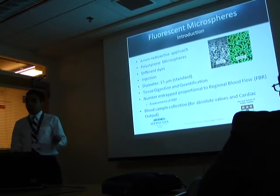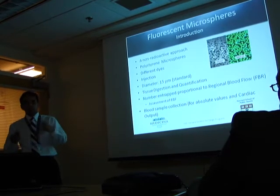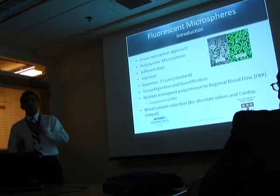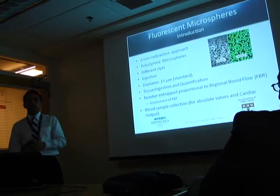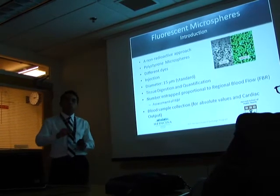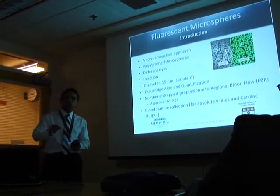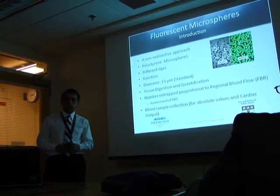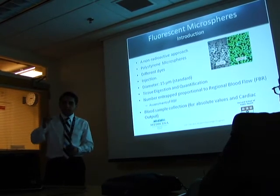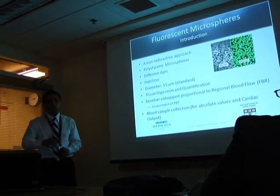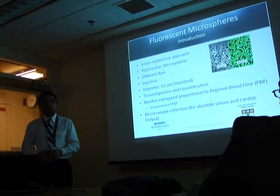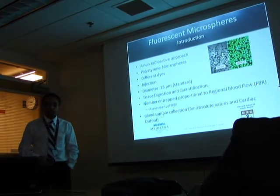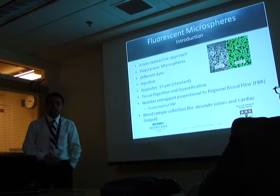The concept is to inject these microspheres into the left chambers of the heart, because we want them to get evenly distributed and mixed with the blood. Then we collect the tissue. They get entrapped in the capillaries — it's important that they are large enough not to get entrapped before in the arterioles, and they need to get entrapped precisely in the capillaries on the first pass. This allows us to have ratios and information about blood flow, because the number of microspheres entrapped in the tissue is in direct relation to the perfusion there.